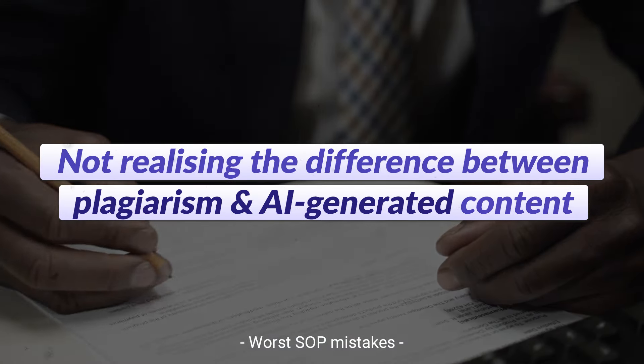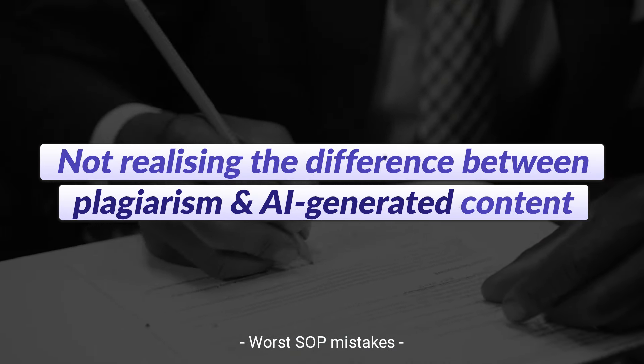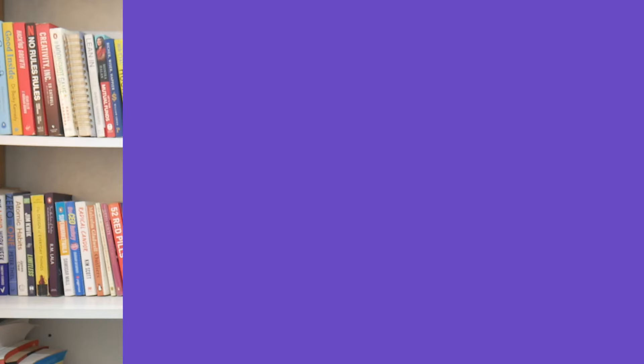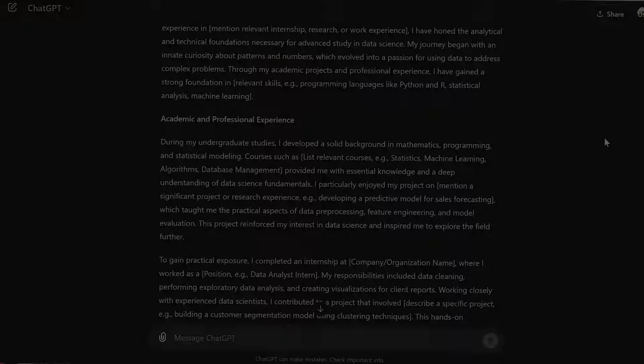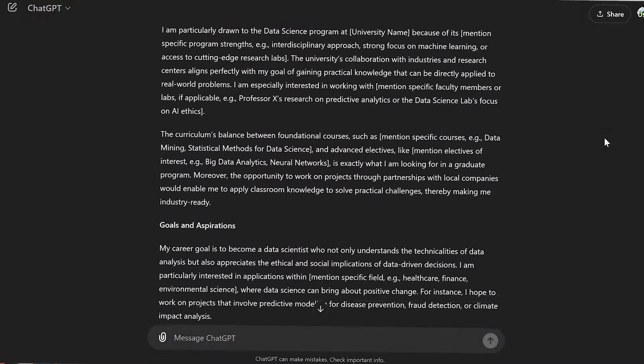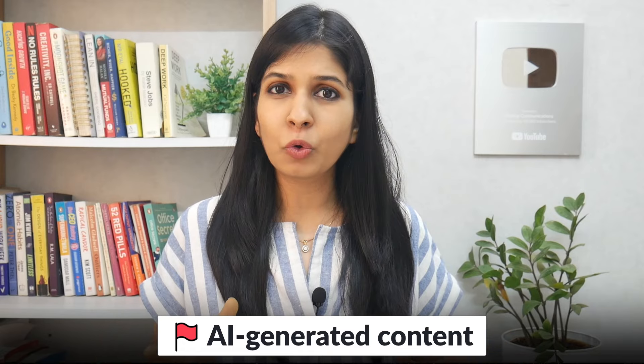Another mistake students are making is not realizing the difference between plagiarism and AI-generated content. Plagiarism means when you copy information line by line from another SOP and incorporate it into your own. When you get your SOP written by ChatGPT, it's not necessarily going to be plagiarism because ChatGPT is not going to use some other student's essay to write your SOP. But it is still going to be AI-generated content because it has not been written by a human being, no matter how much you try to humanize it.